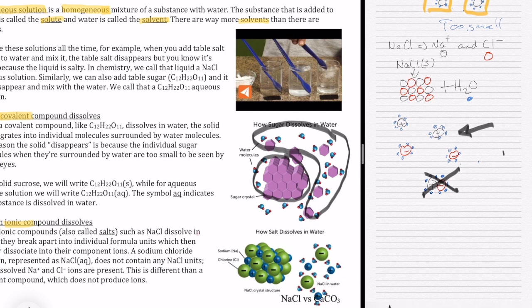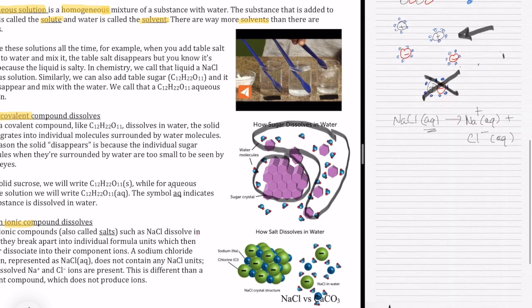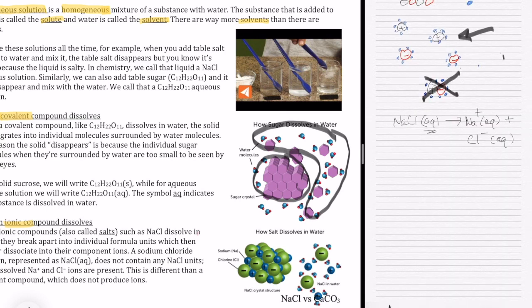So that's important because when we write NaCl dissolve in water, really what we should write is not NaCl aqueous, but it should be Na plus aqueous and then Cl minus aqueous. So now let's talk a little bit about how we know that it looks like this and it doesn't look like that. Well, we do that by experiment.